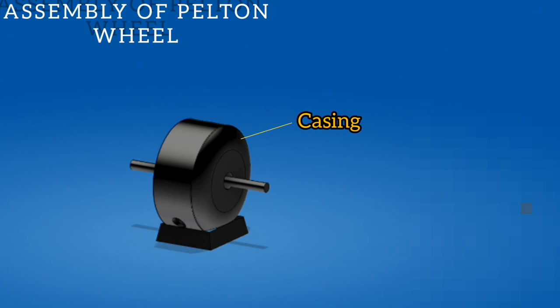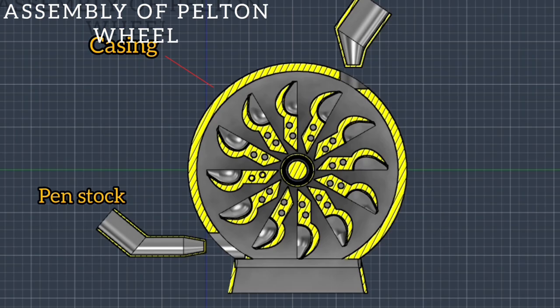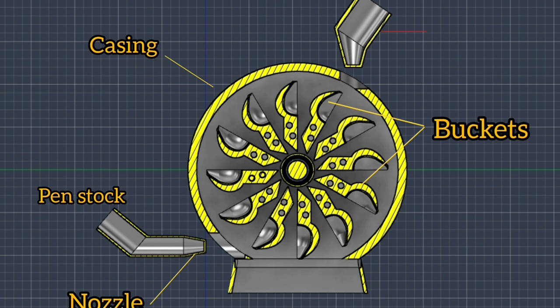The components of the Pelton wheel are: casing, penstock, nozzle, buckets, brake nozzle, and tail race. The water from the high reservoir